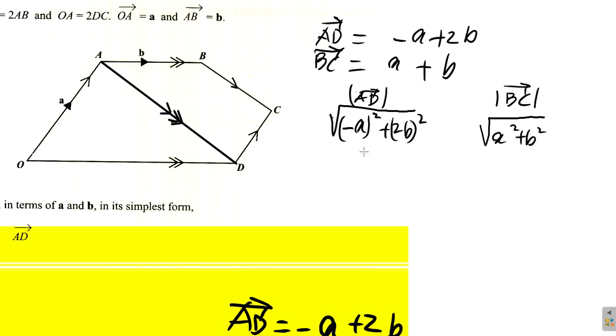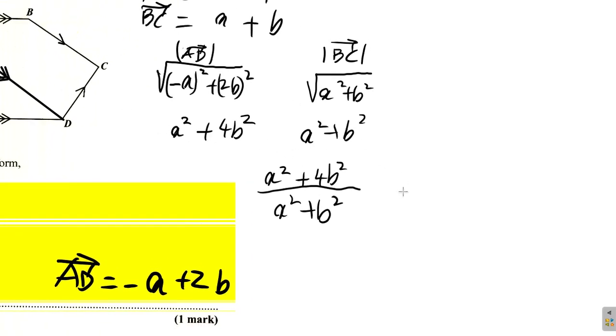Now you're comparing them. Now if you drop the square root part, you have a squared. Negative a squared is a squared, plus 2b squared which is 4b squared on this side. And then on this side you have a squared plus b squared. Now if you divide them like that, you would have a squared plus 4b squared over a squared plus b squared.